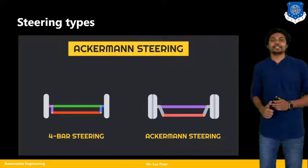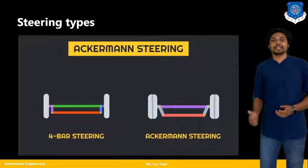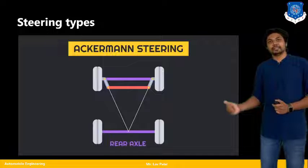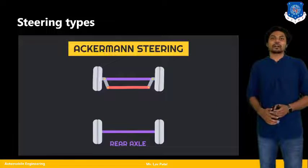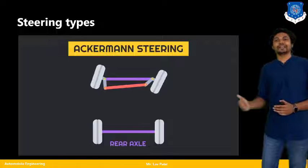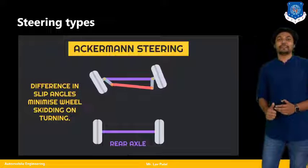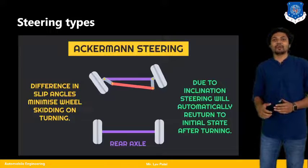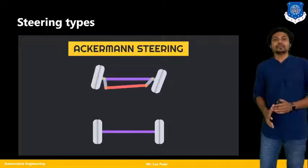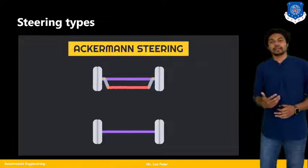Moving further, the second type is Ackermann steering. Ackermann steering has a different kind of mechanism than four-bar steering. In four-bar steering you find a fixed link and tie rod of equal length, while in Ackermann steering there is a difference in the length of those two links. Turning left or right can be achieved with the help of the slip angle, which we have already discussed. The difference in slip angle minimizes wheel skidding or turning due to inclination — that issue does not occur, so we can say Ackermann steering is very suitable for cars.